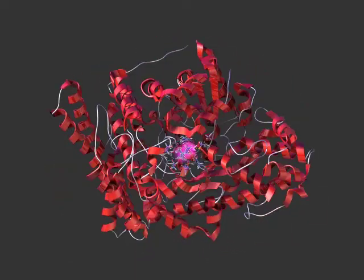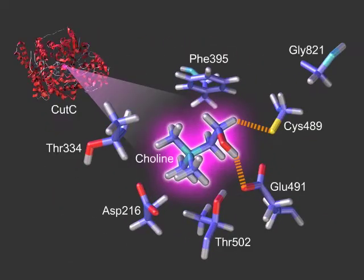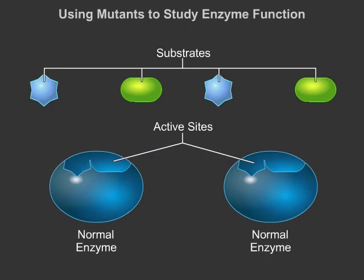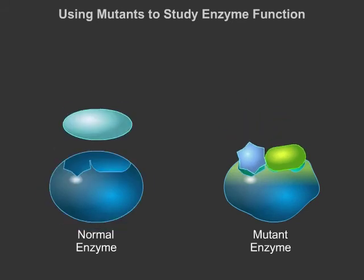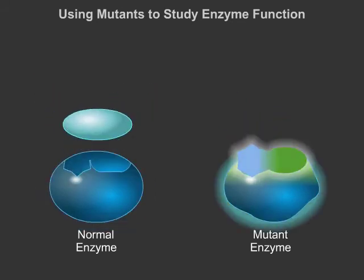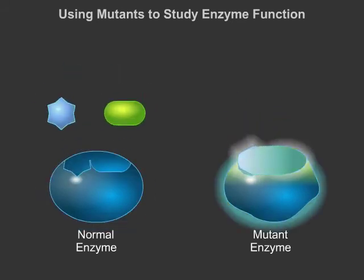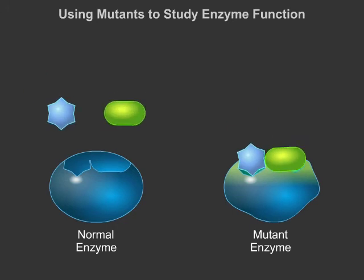However, by basing the computational model on known structures of similar proteins, and using tools from physics and statistics to combine them, we can make a possible structure that could help us figure out how to inhibit this enzyme. A different approach is to try to understand how these enzymes work biochemically. By testing how different mutations affect enzyme activity, we can start to see what regions of the enzyme are important for proper function.